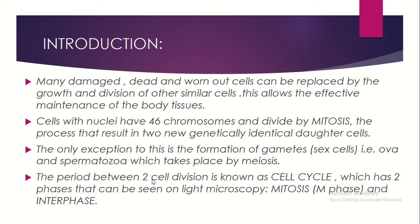The period between two cell divisions is known as the cell cycle — a complete cycle from one division to the next. There are two phases that can be seen on light microscopy: the M phase — mitosis and cytokinesis — and interphase.